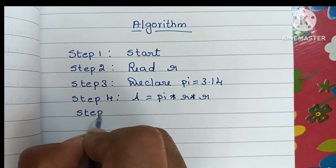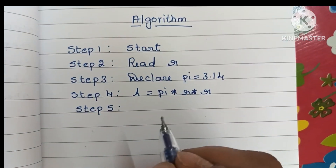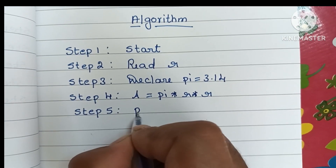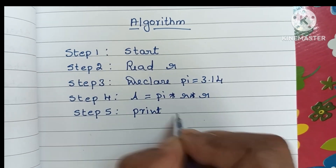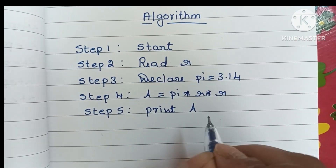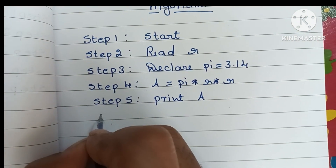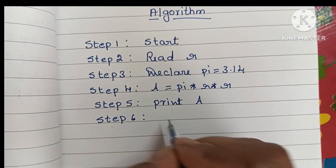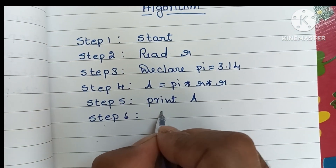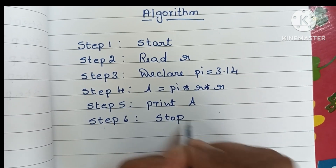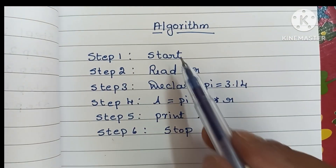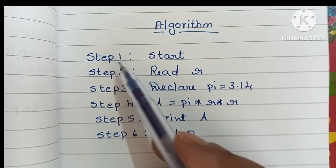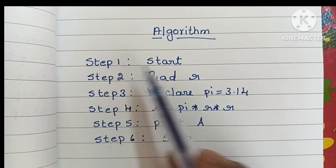In step five, we have to display or print the output value, that is A, which stores the area of the circle. In step six, we terminate the algorithm using the stop statement. An algorithm always starts with a start statement and ends with a stop statement.